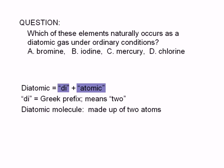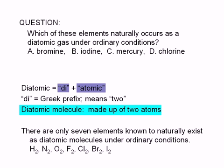Therefore, a diatomic molecule is a molecule that is made up of two atoms. There are only seven elements known to naturally exist as diatomic molecules under ordinary conditions.